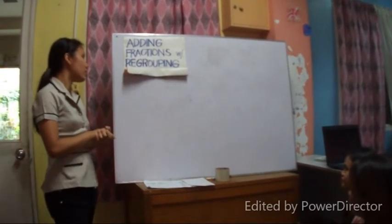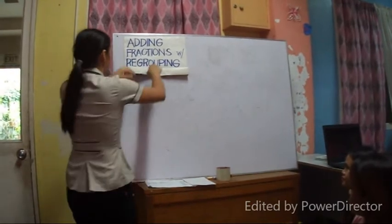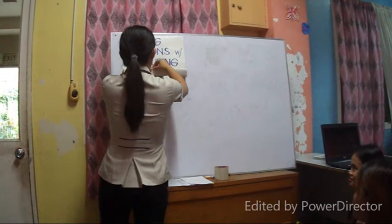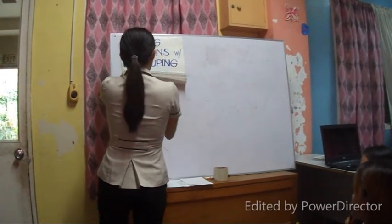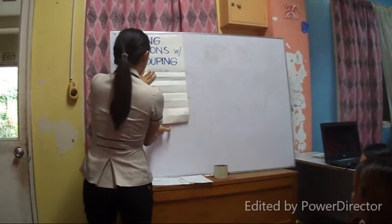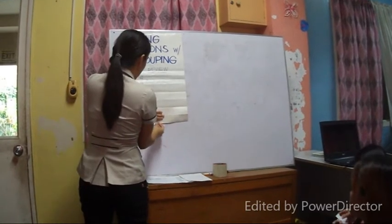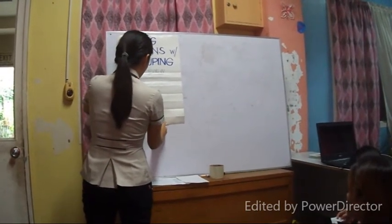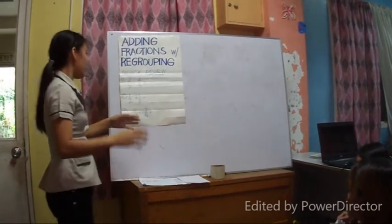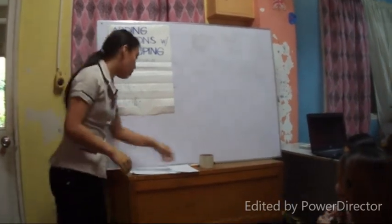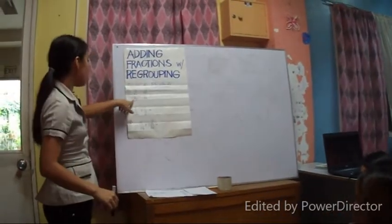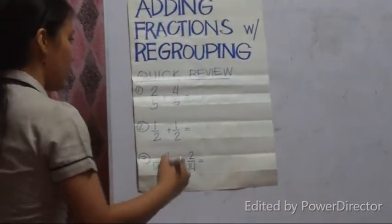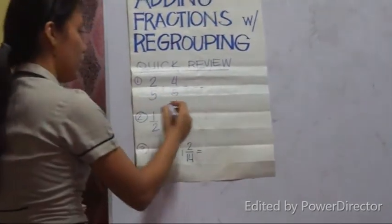Before we proceed with our next lesson, let us first have a quick review of our previous lesson. I need your utmost participation in this class. This is so easy — I'm sure you will have no sweat on this. Teach me how to answer this. What is the answer in number one? Two over five plus four over five. They have the same denominator, right?